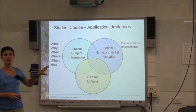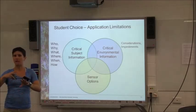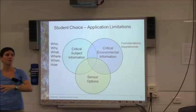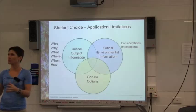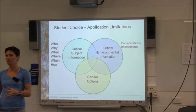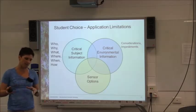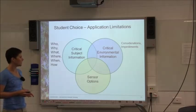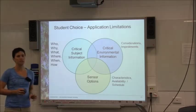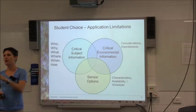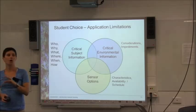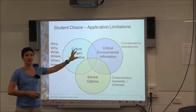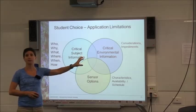The environmental information is about clouds, time, anything that might make the feature you're looking at move — so potentially winds or currents, in the aspect of the Malaysian Airlines case. The sensor options is really about trying to find a particular satellite or sensor that's going to match our critical subject information and the environmental characteristics as well.